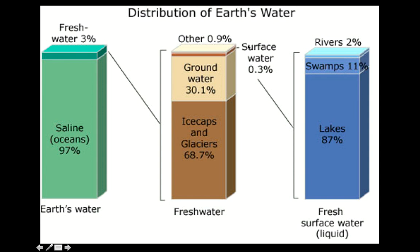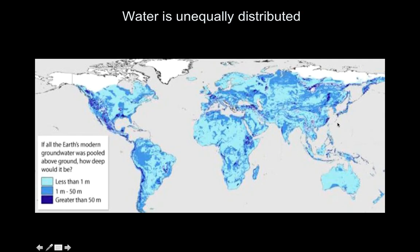Of the 0.3 percent that is surface water, that's where your lakes, rivers, and streams are located — and these are not sources where we can get that much water from. Here's a map showing where water is distributed unequally across the globe. Darker areas have more water; lighter blue areas have less. Desert regions like the Sahara have very little, and even parts of the United States face similar situations.